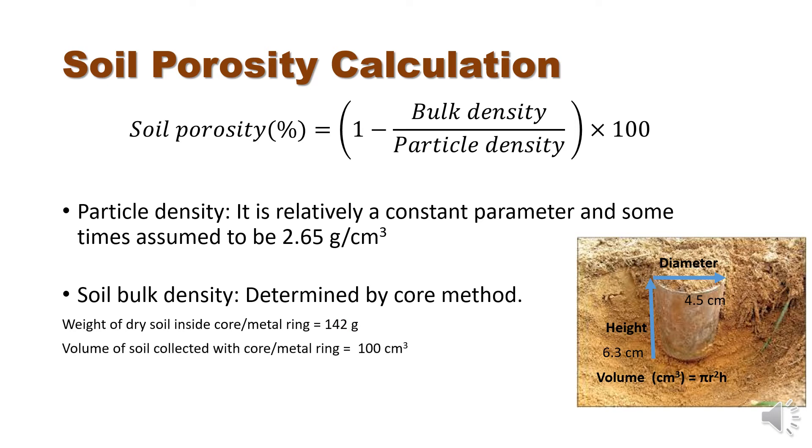Similarly, the volume of soil collected with the core or metal ring can be calculated by using this formula: volume equals π r² h.